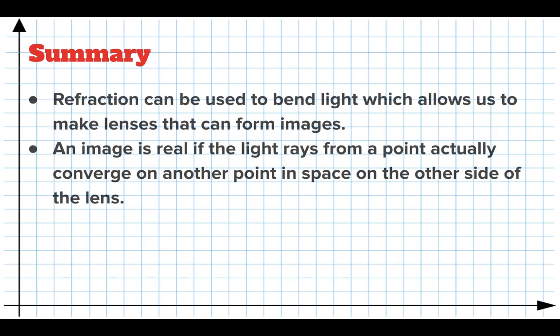Here's a quick summary of what we know. First, refraction can be used to bend light, and this allows us to make lenses that can form images. Second, an image is real if the light rays from a point actually converge on another point in space on the other side of the lens — the light rays spread out, hit the lens, and get bent back together to form an image. What we're going to do next is a lab where you'll investigate the relationship between images and objects.